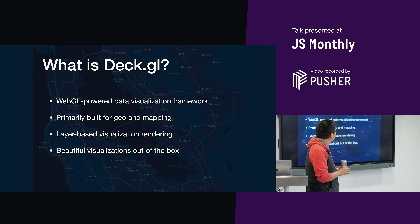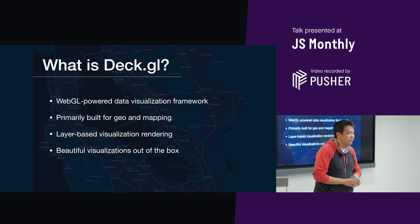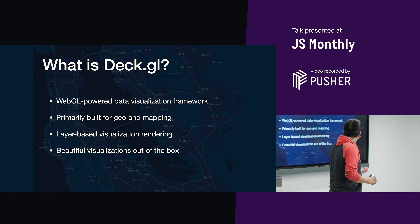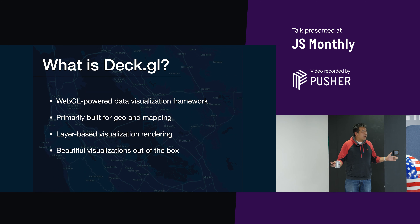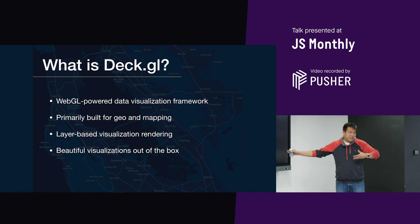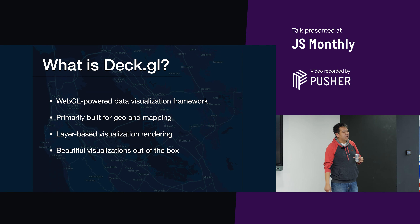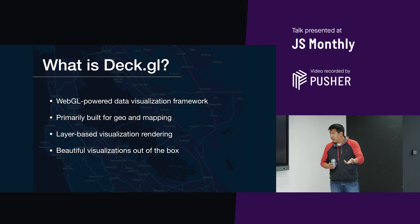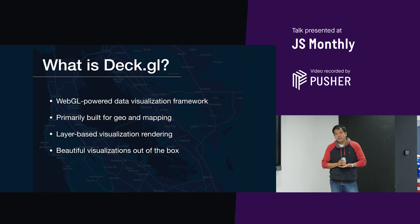This is where DeckGL comes in. It's an open source framework built by the engineering team at Uber — as you can imagine, they have a lot of geodata they want to visualize within the context of the real world. It's a WebGL-powered data visualization framework. WebGL is built on the OpenGL standard and allows you to access the GPU from the browser for 2D and 3D rendering. DeckGL gets its performance by pushing all the rendering and data processing off to the GPU.